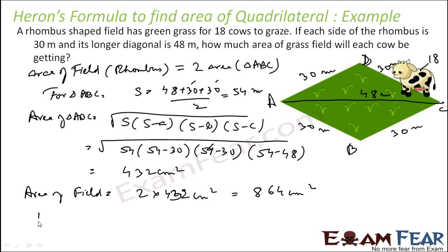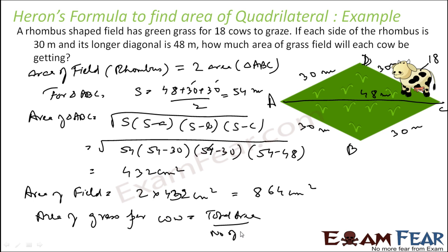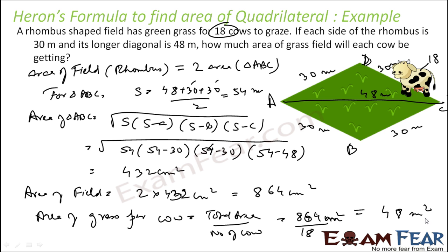So the area of grass per cow is total area divided by number of cows: 864 m² divided by 18. Solving this, we get 48 m² per cow. Please note everywhere the unit is meter square.